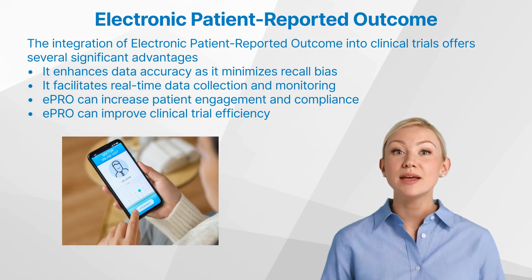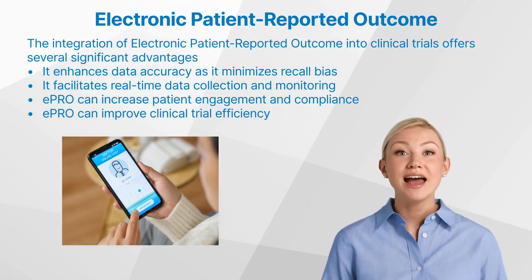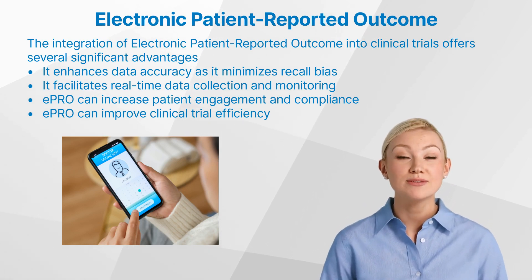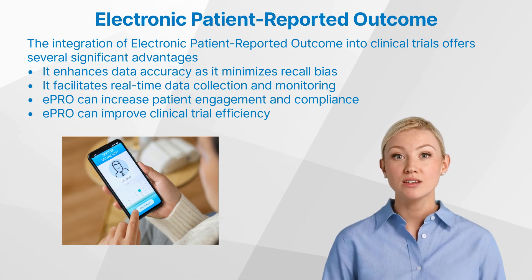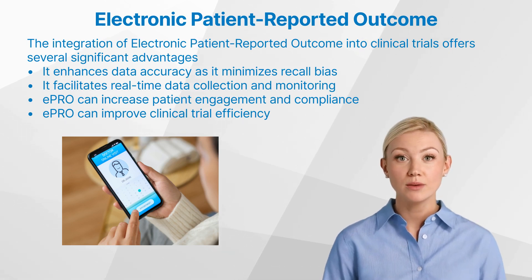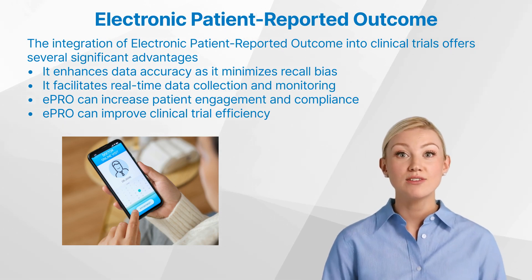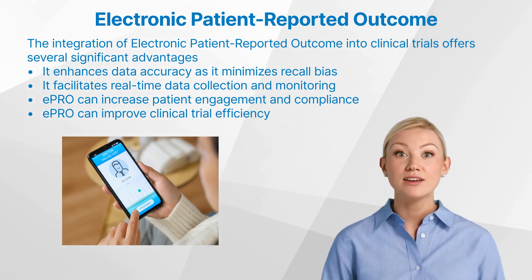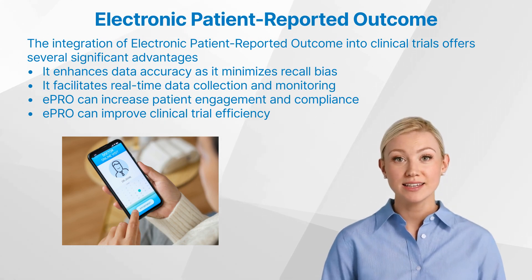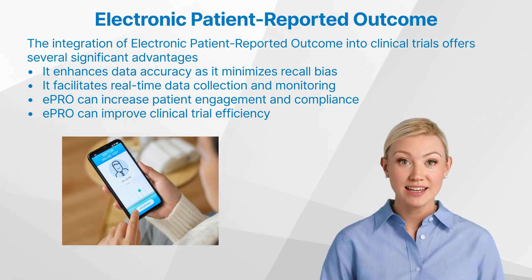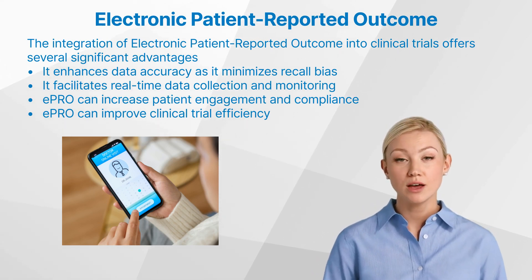Electronic patient reported outcome plays a vital role in clinical trials by providing real-time, accurate patient data that can significantly improve the design and execution of these studies. For example, in oncology trials, electronic patient reported outcome has been used to monitor symptoms and side effects of treatments such as chemotherapy or radiation therapy. This direct feedback from patients allows researchers to adjust treatment plans promptly if necessary, improving patient care and potentially saving lives.